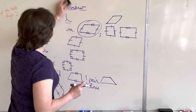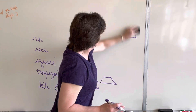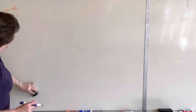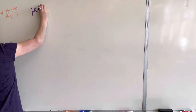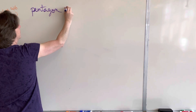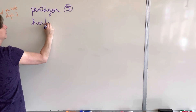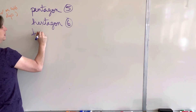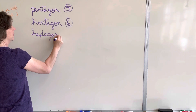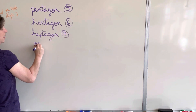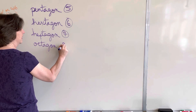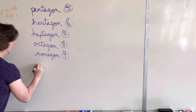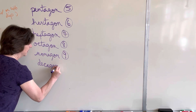After quadrilaterals, we have polygons with different numbers of sides. Quadrilateral is four. Then we have a pentagon with five, a hexagon with six, a heptagon with seven, an octagon with eight, a nonagon with nine, and a decagon with ten.